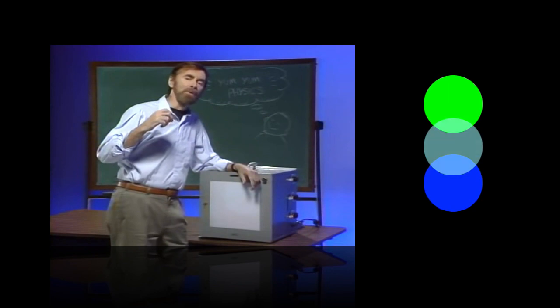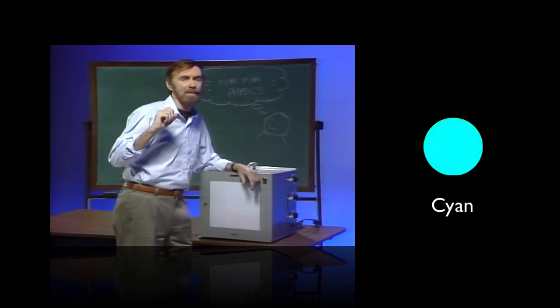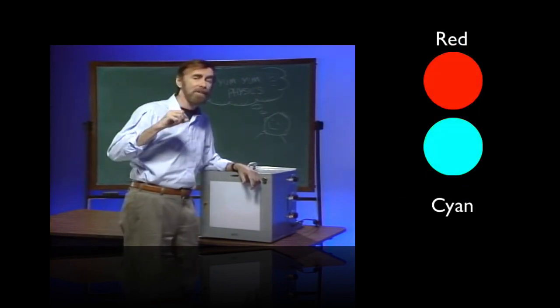Well, the green and the blue will give you a greenish blue called cyan. And it turns out the cyan and the red are enough to give you white light.